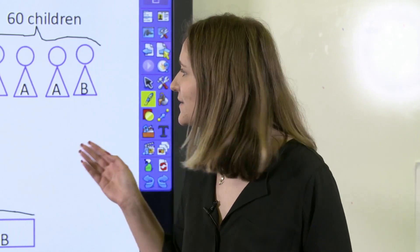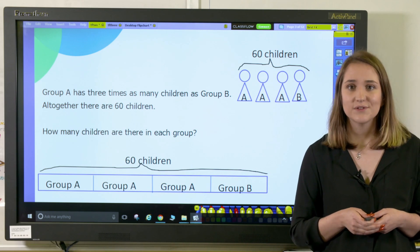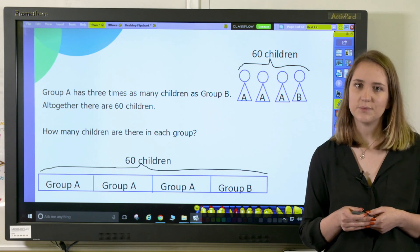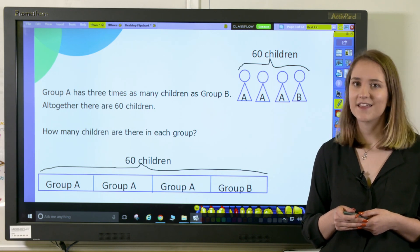So therefore they can use this to calculate that 45 children are in group A and 15 are in group B. You may wish to challenge your pupils to see how many different ways they can calculate this problem.